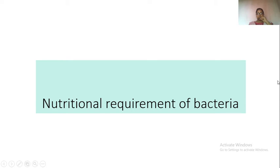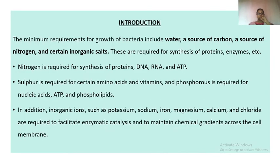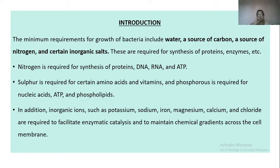Based on different nutritional requirements, we can select the appropriate media so the desired pathogen will grow. The minimum requirements for bacterial growth are water, a source of carbon, a source of nitrogen, and inorganic salts. Certain organisms also need blood or serum for extra nutrition. Nitrogen is required for the synthesis of DNA, RNA, and ATP; sulfur is required for certain amino acids and vitamins; and inorganic salts facilitate enzymatic catalysis and maintain chemical gradients across the cell membrane.